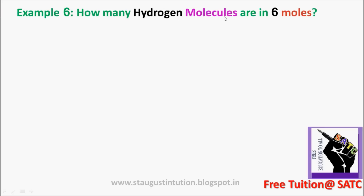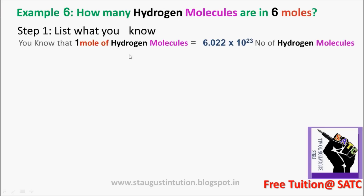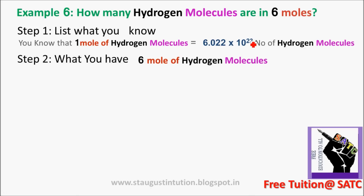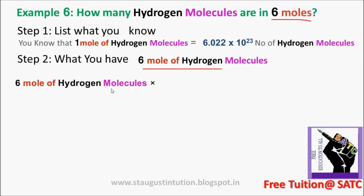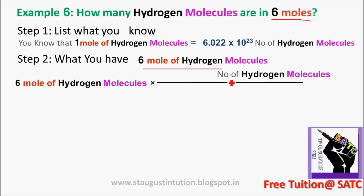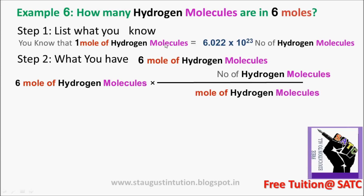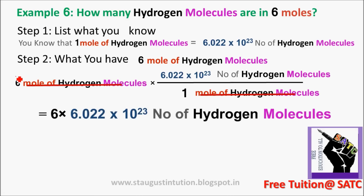Next question: how many hydrogen molecules are in 6 moles? List what you know: 1 mole of hydrogen molecules is equal to 6.02 × 10²³ number of hydrogen molecules. What do you have? 6 moles of hydrogen molecules. Cancel the moles of hydrogen molecules unit. The answer is 6 × 6.02 × 10²³ number of hydrogen molecules.